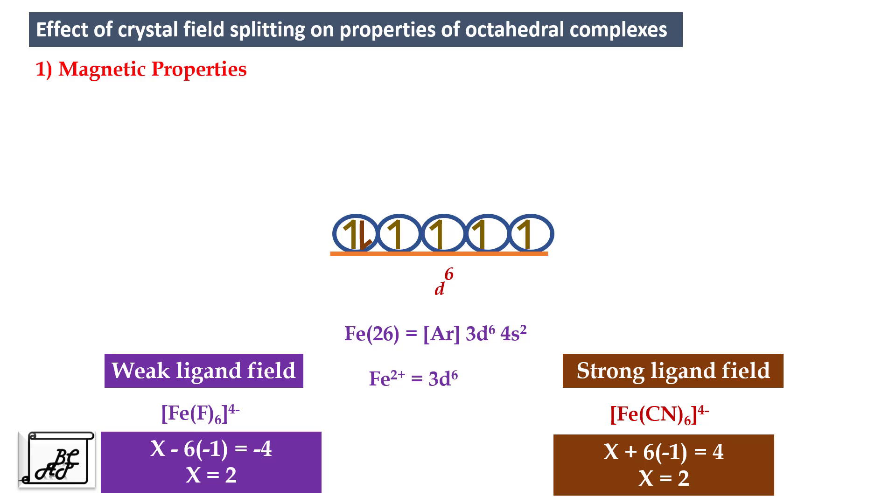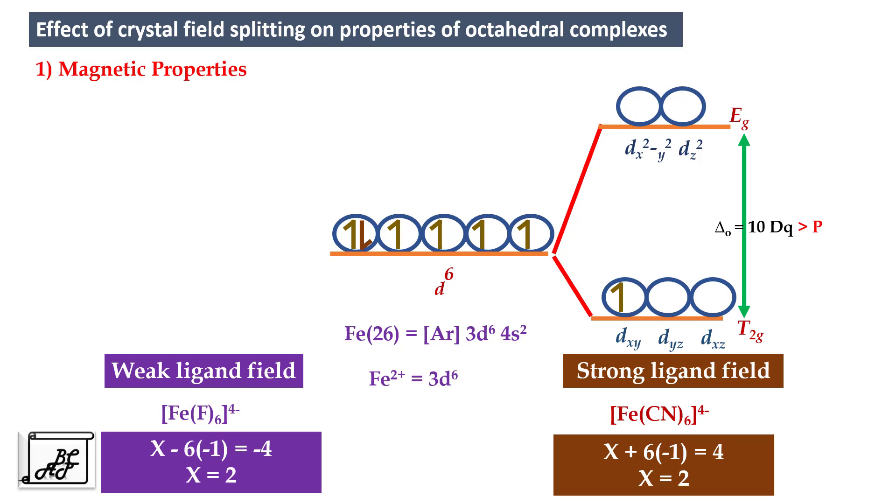In case of strong ligand field these 3d orbitals split into two levels T2g and Eg. The 10DQ parameter is higher than the pairing energy. When we fill the electrons the first three electrons get occupied into T2g orbital. As the gap between the T2g and Eg orbital is higher, the fourth, fifth, and sixth electron also gets occupied into the T2g orbital. That is how we get low spin complex or spin paired complex.